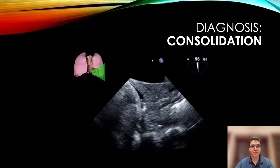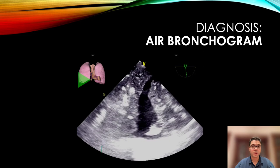Let's now move to our second diagnosis: consolidation. Consolidation is a generic term used when the lungs become solid, having a similar echo texture to the spleen and liver — this is why it is sometimes called hepatization of the lung. We can see this with both pneumonia and atelectasis. Some more subtle signs can help us differentiate pneumonia from atelectasis. Analogous to chest radiograms, we can sometimes see air bronchograms in consolidations — small hyperechoic areas appearing bright white, representing air trapped in the consolidated lung. This is generally more in favor of pneumonia rather than atelectasis.